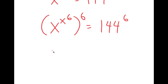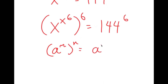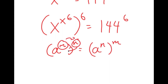Now from here, if I have something in the form a to the power of m to the power of n, this is equal to a to the power of n to the power of m. So basically, I can switch the places of these two exponents. That's what I'm going to do with x to the power of 6 and 6.